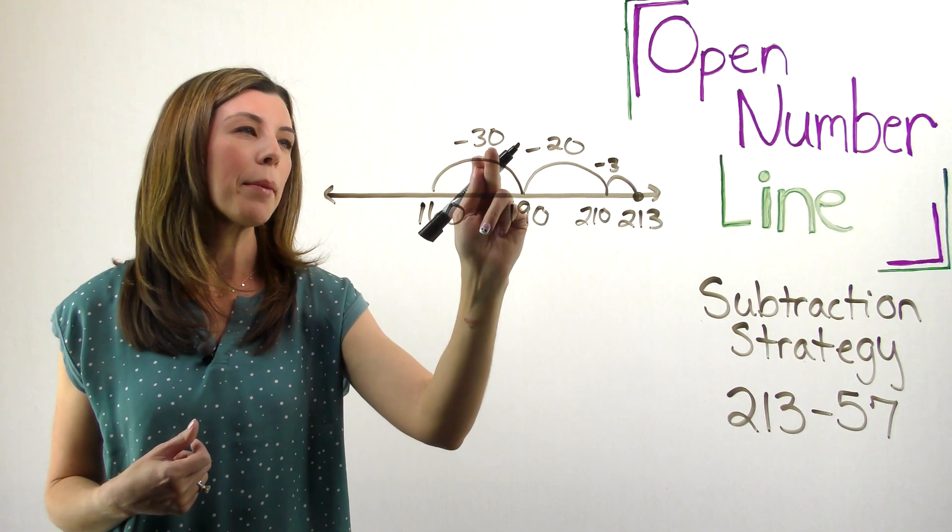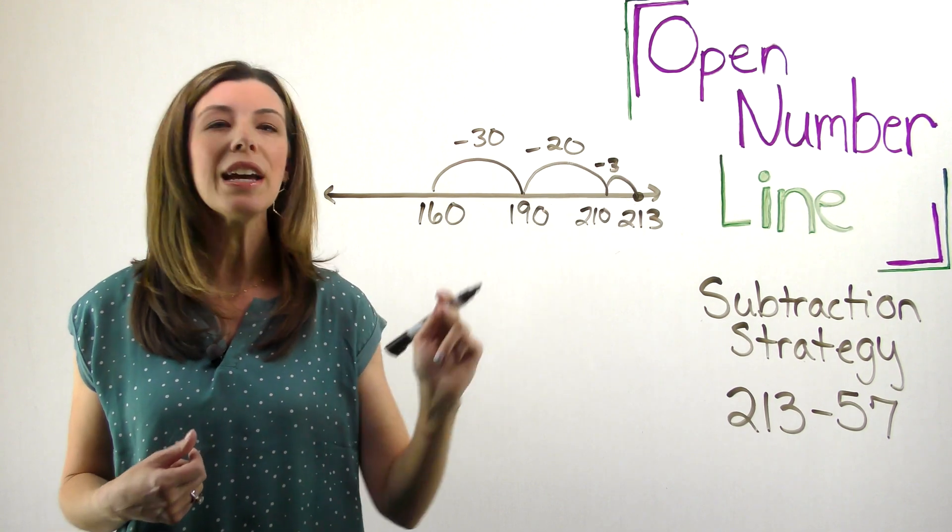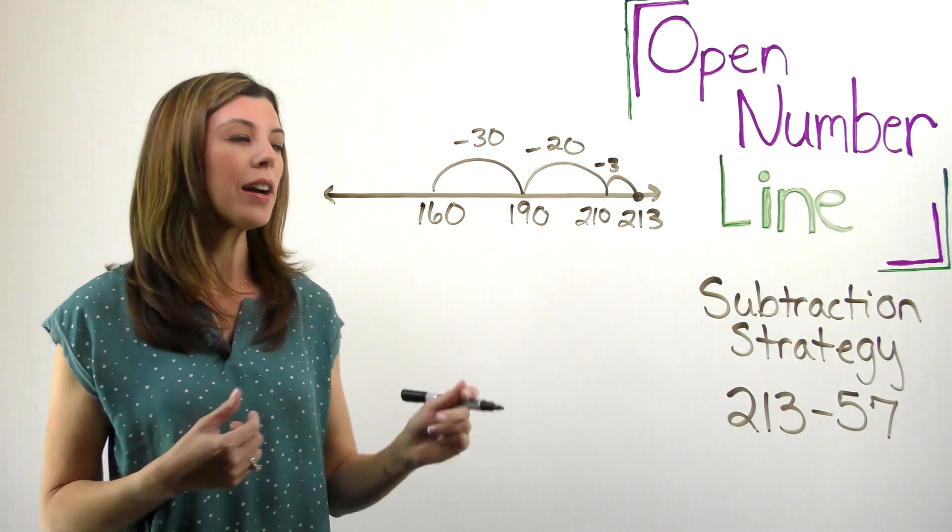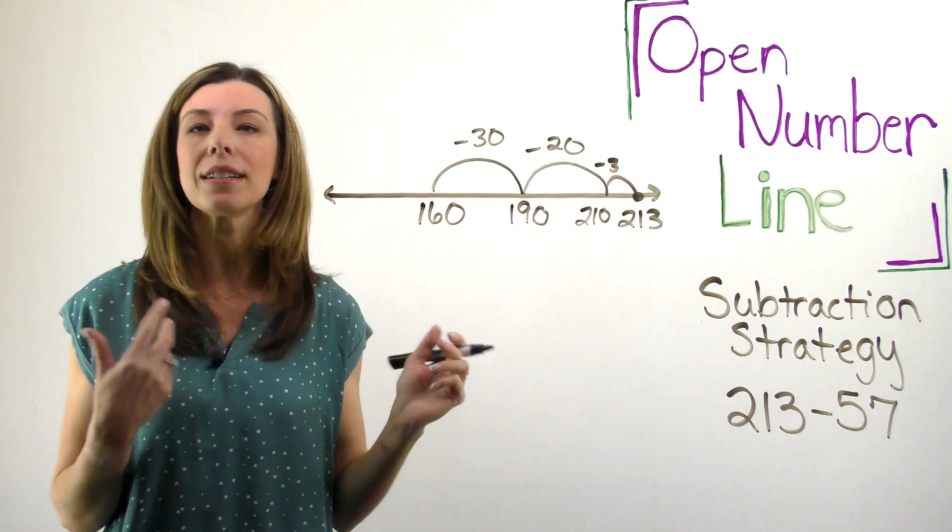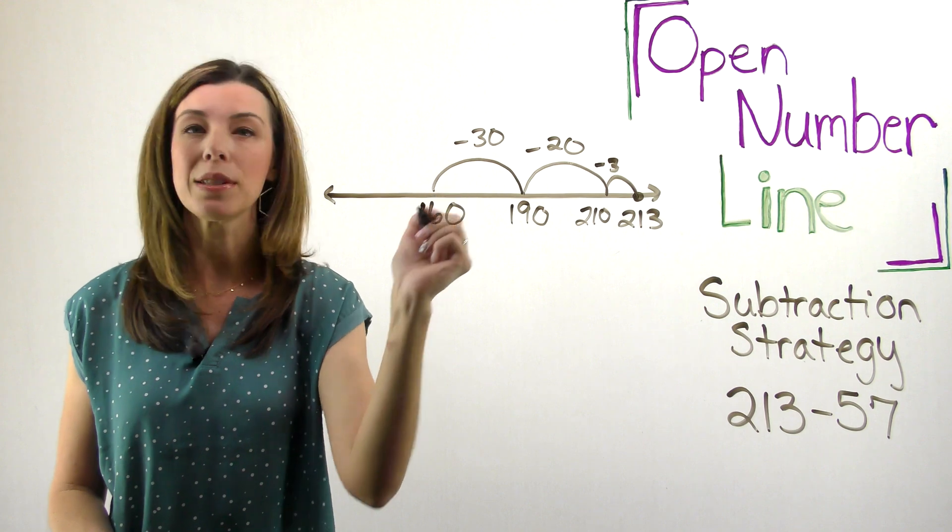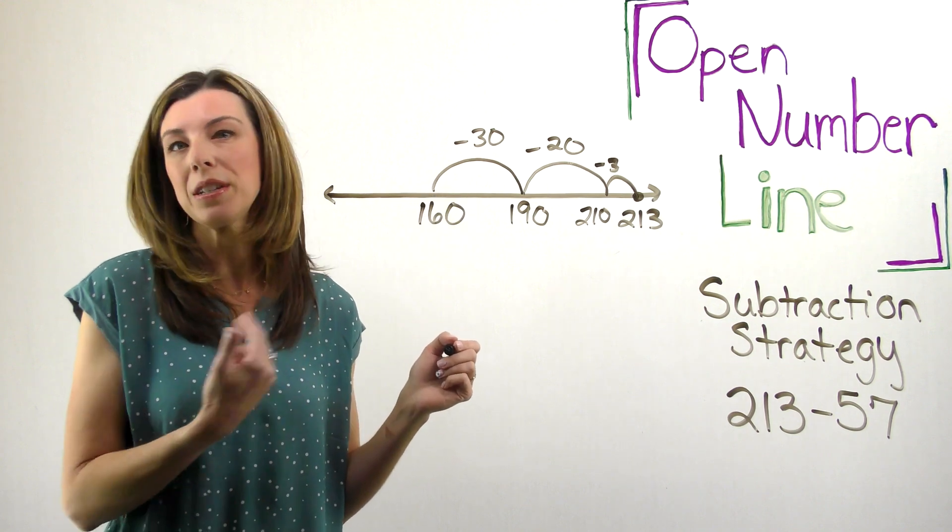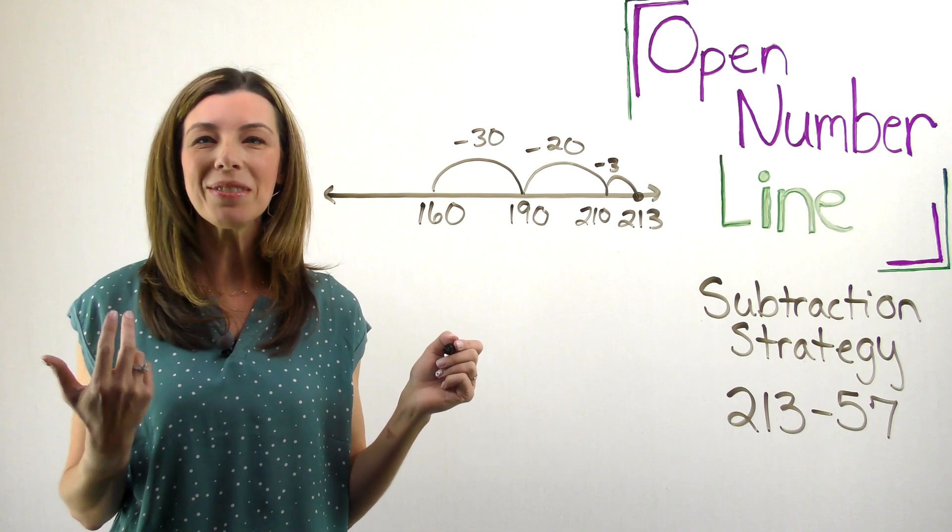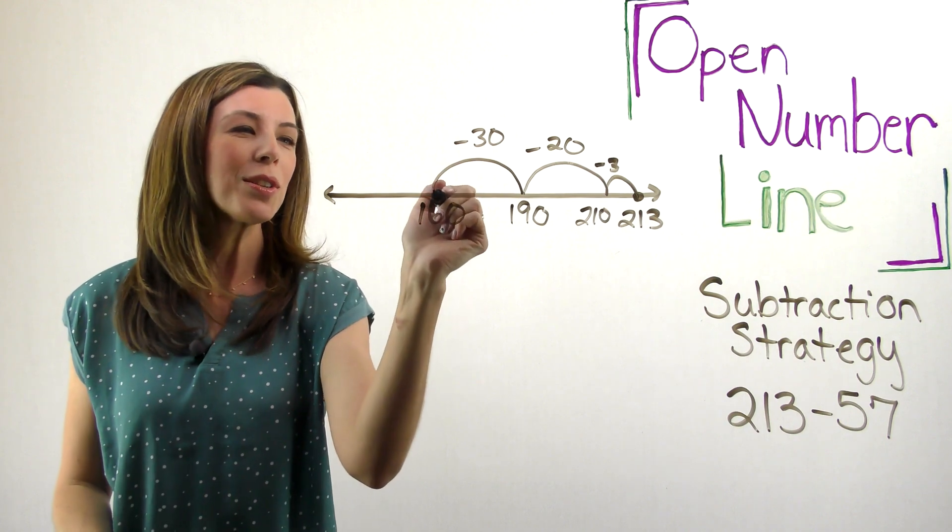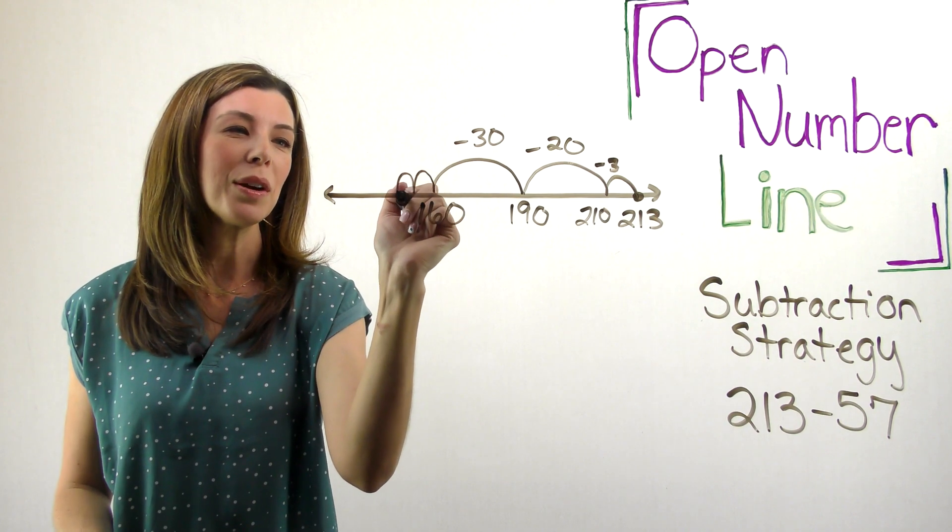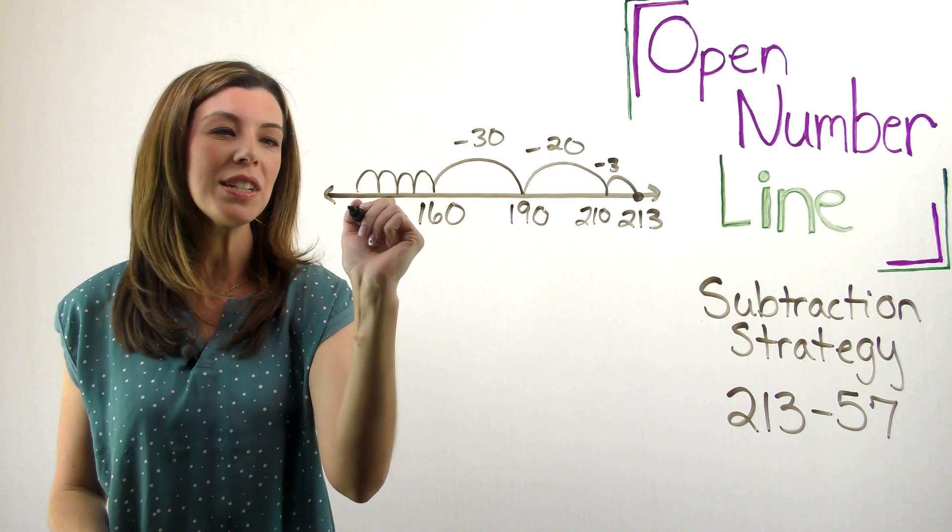Now I'm noticing up here that I'm at 30 and 20 is 50, 53. So as of right now, I've subtracted 53. Again, I need to get to 57. I could go ahead and subtract 4. Now maybe a student doesn't know what 160 minus 4 is. So the beauty of this is they could subtract by 1. So they could go 159, 158, 157, 156.